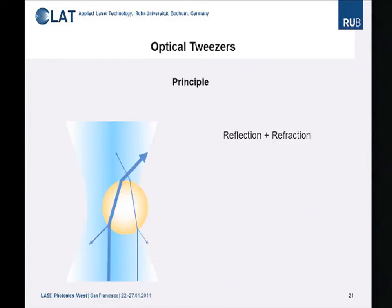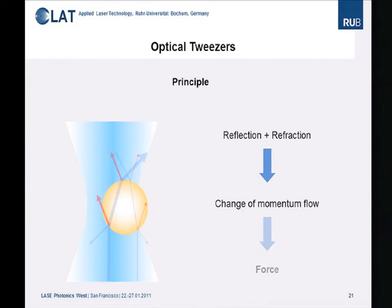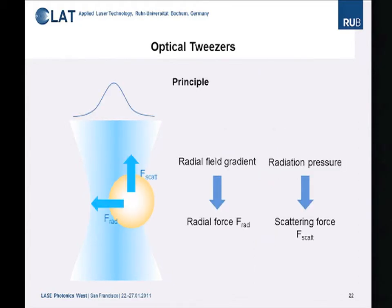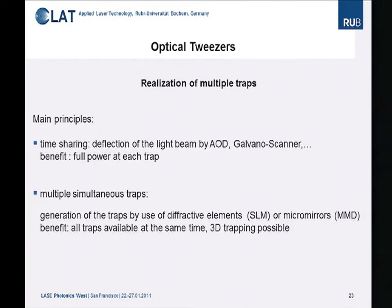Next, I want to show some applications of optical tweezers, particularly in micromanufacturing. In optical tweezers, a particle experiences reflection and refraction, meaning a change in the momentum flow of photons. As a reaction, the particle is forced to move in a certain direction. In one dimension we observe a scattering force, and in the other direction a radial force, which forces the particle into the focal position. With tight focusing, we create an optical trap for trapping particles.